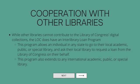In regards to cooperation with other libraries, while other libraries cannot directly contribute to the Library of Congress's digital collections, the Library of Congress does have an interlibrary loan program. This program allows an individual in any state to go to their local academic, public, or special library and ask their local library to request a loan from the Library of Congress on their behalf. This program also extends to any international academic, public, or special library.